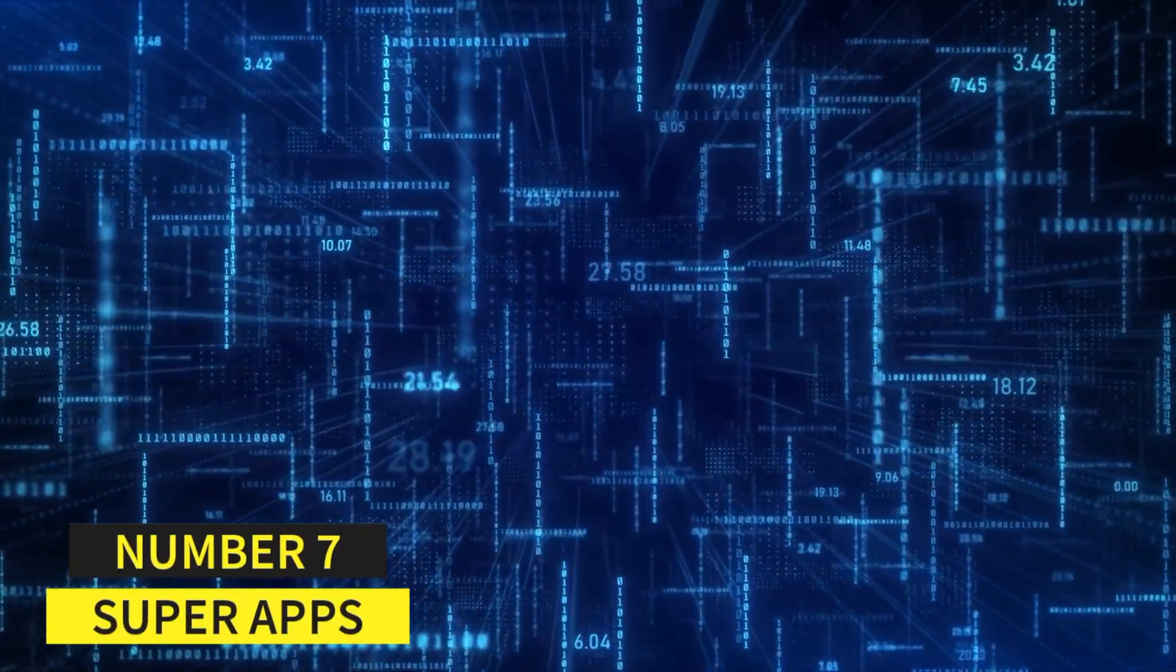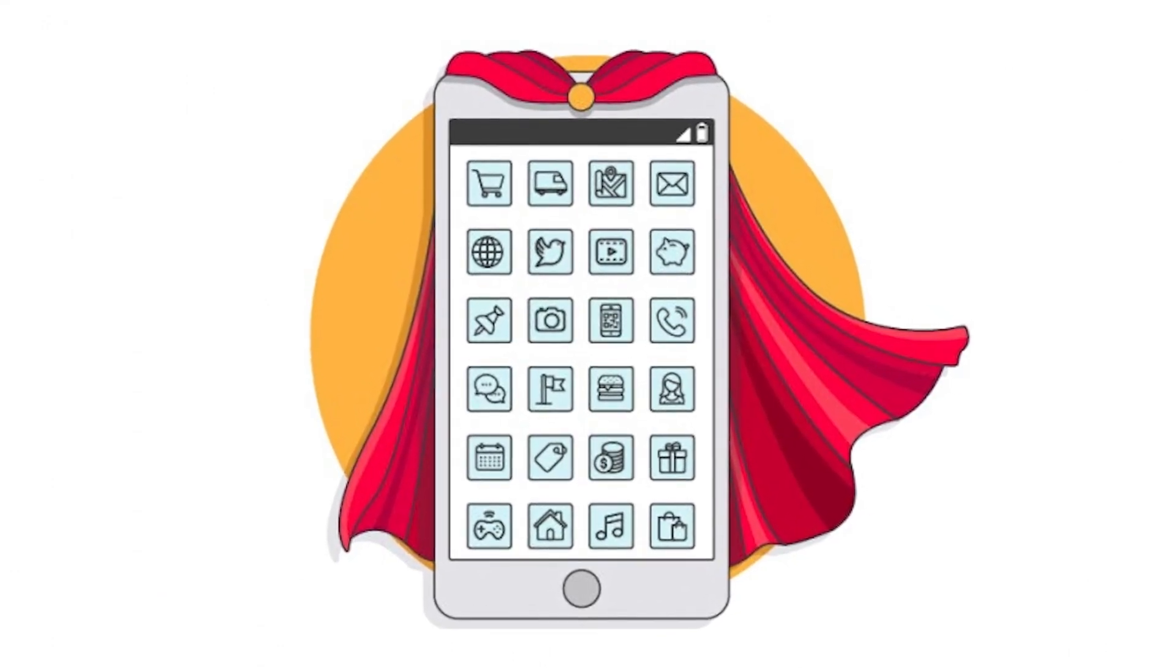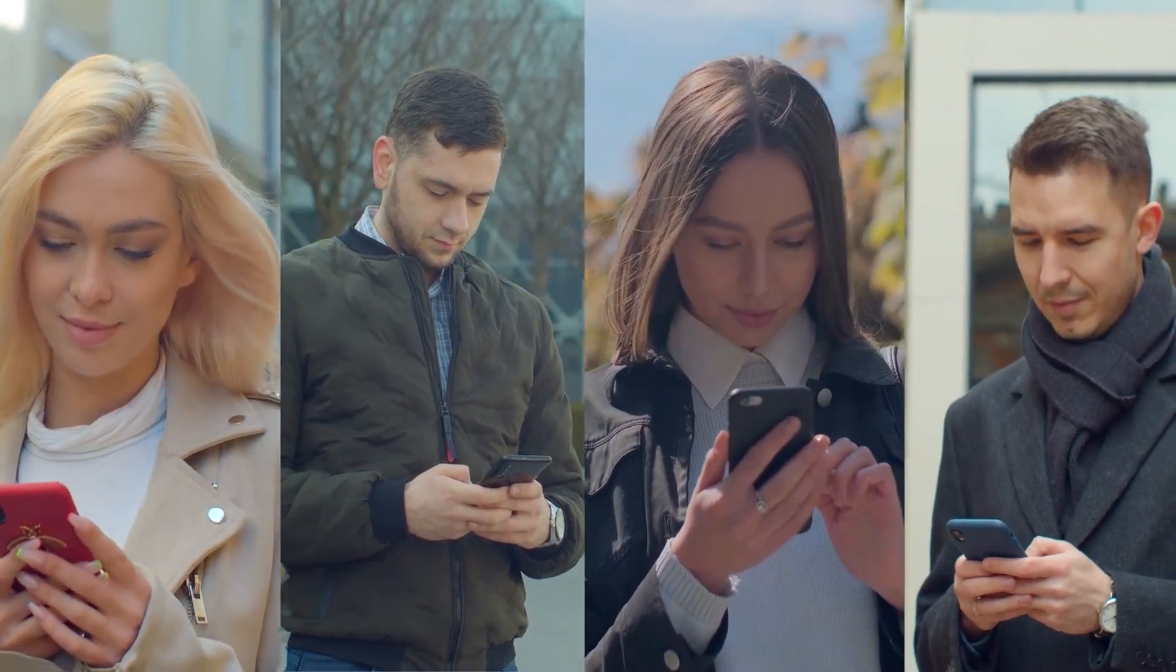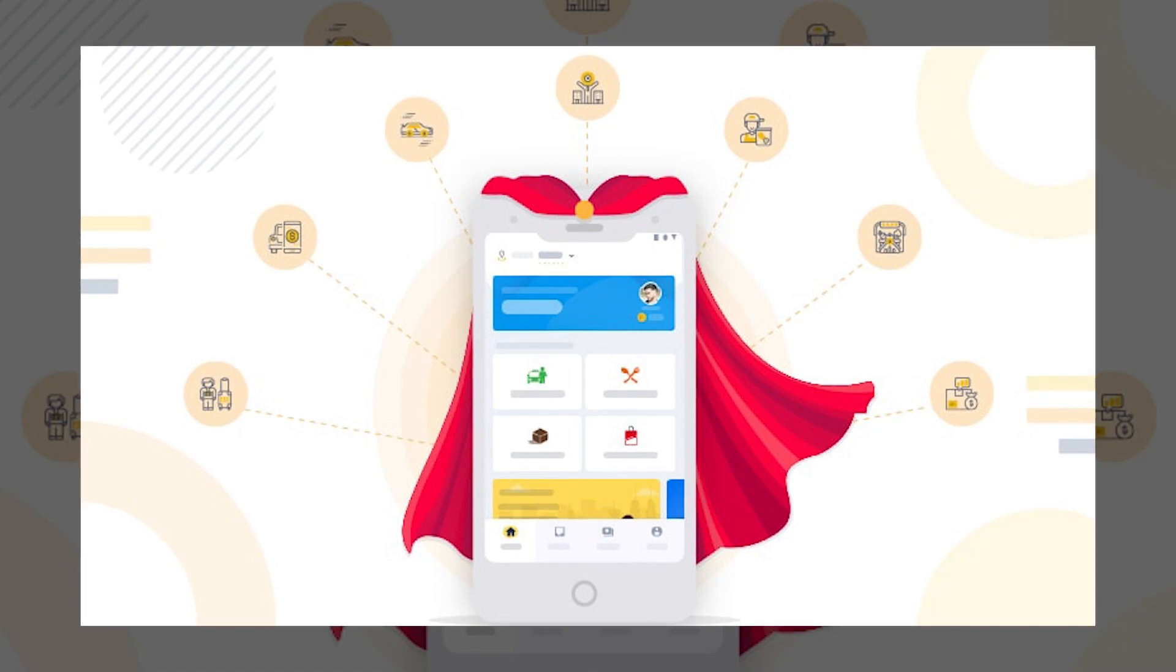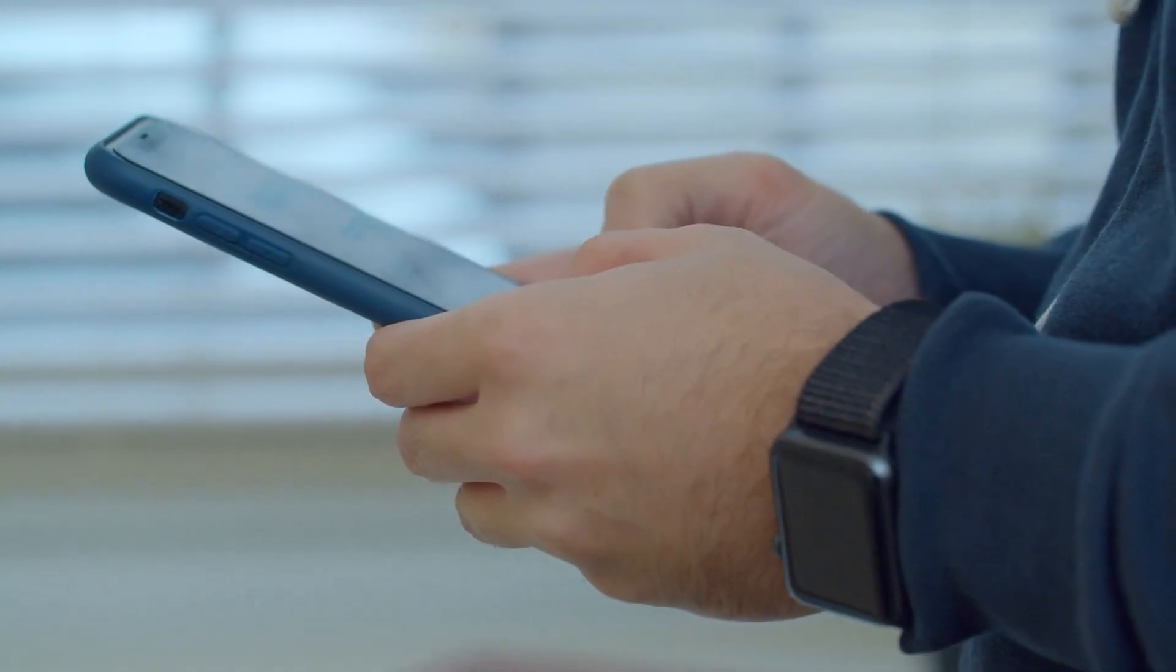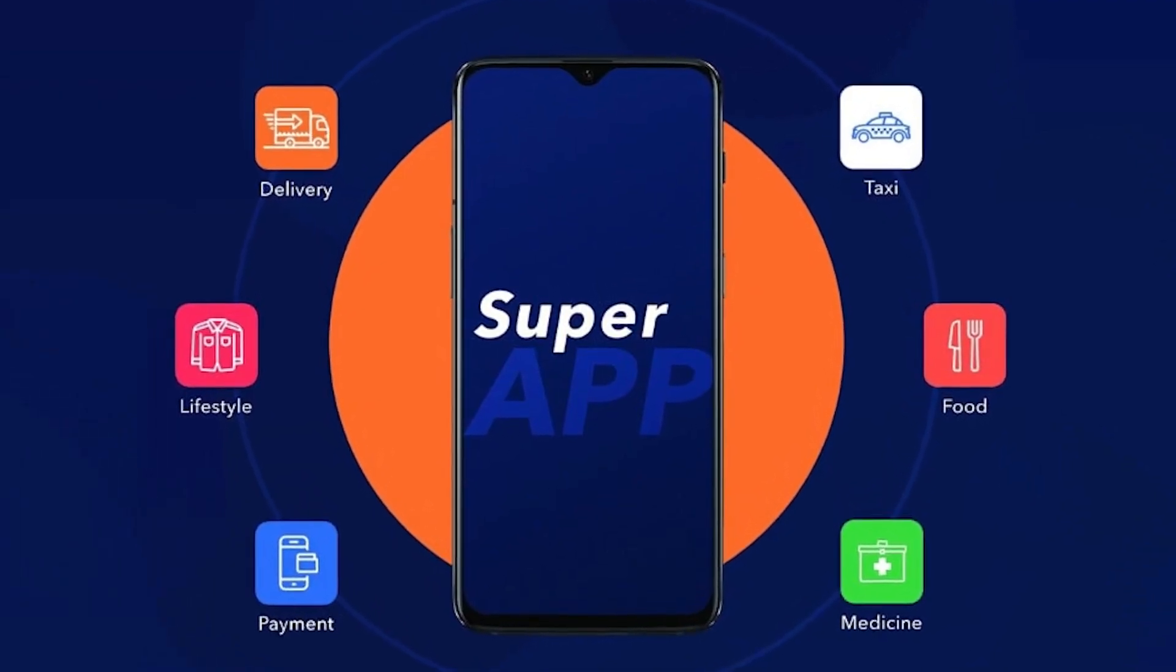Number 7, Super Apps. This versatile all-in-one application is taking the world by storm, and according to Gartner, more than 50% of the global population will be using it daily. But wait, it gets even better. Super Apps can include mini-apps as add-ons, making them even more powerful and useful for your daily needs. This means you can access multiple features and benefits all from one unified interface.